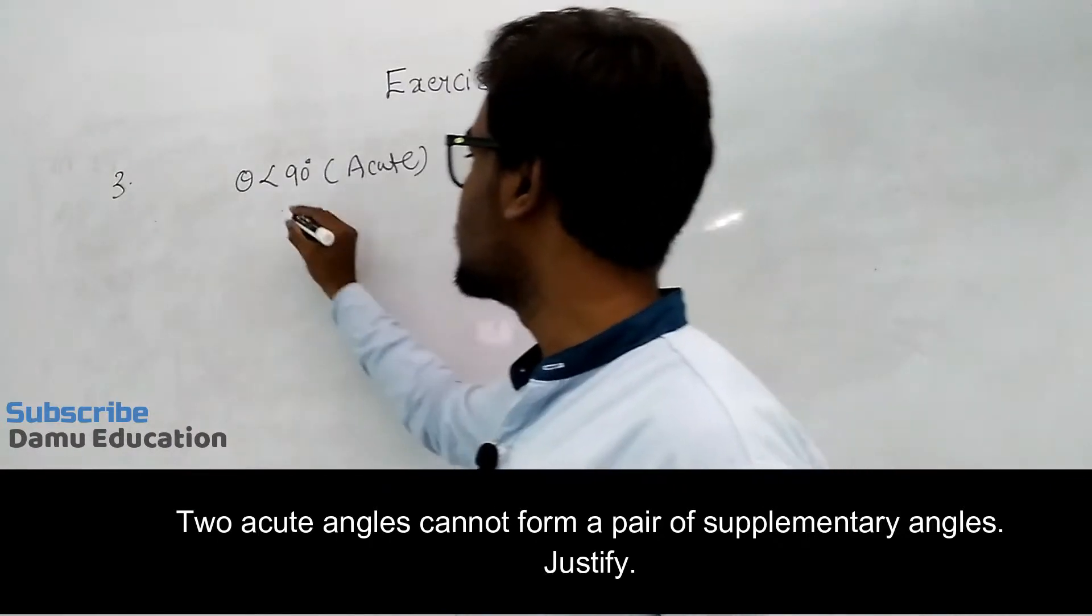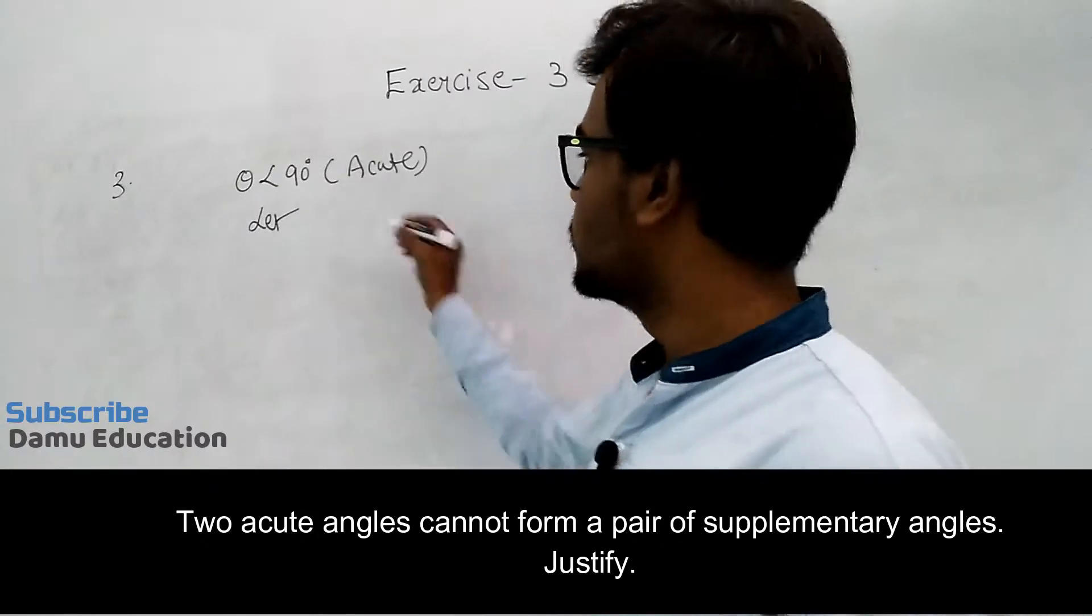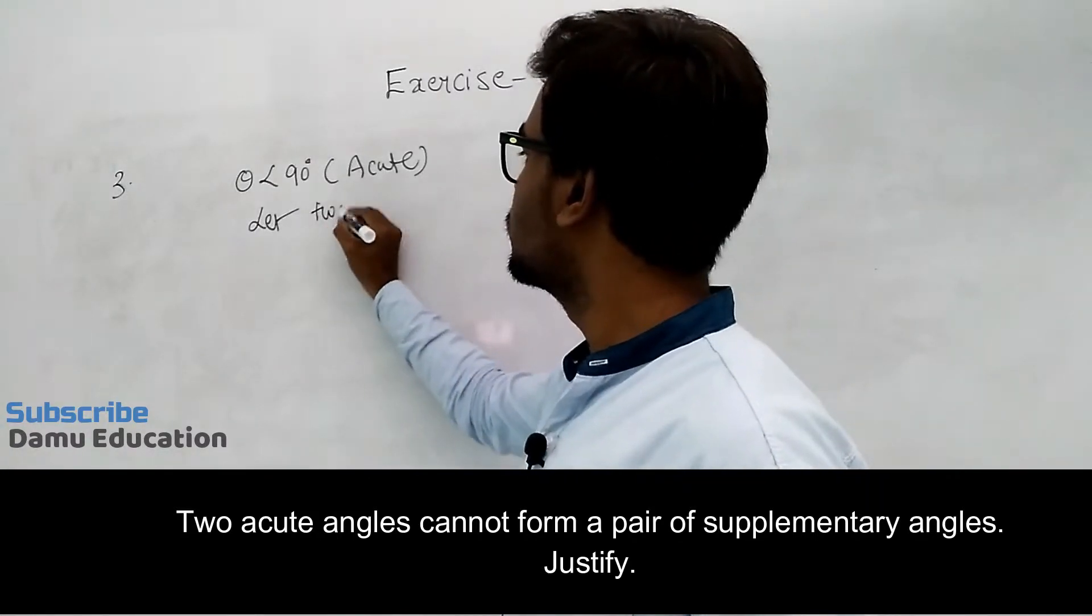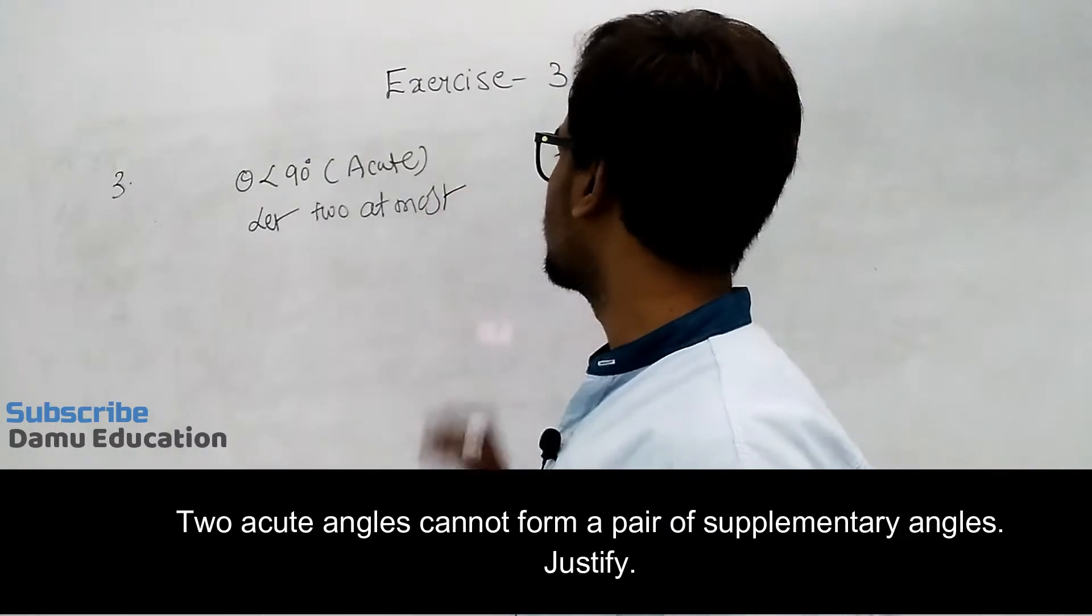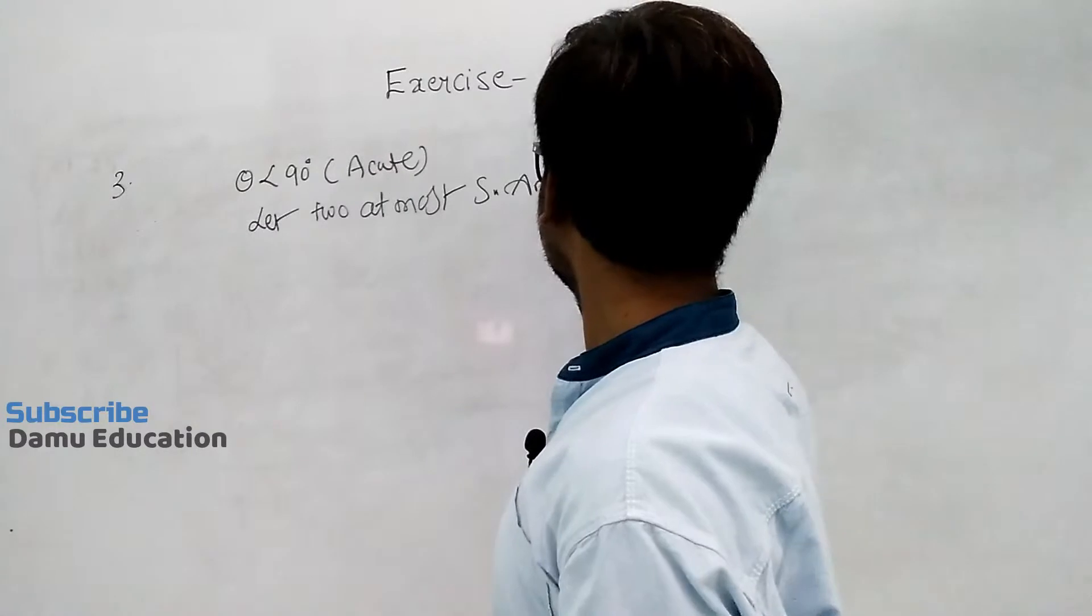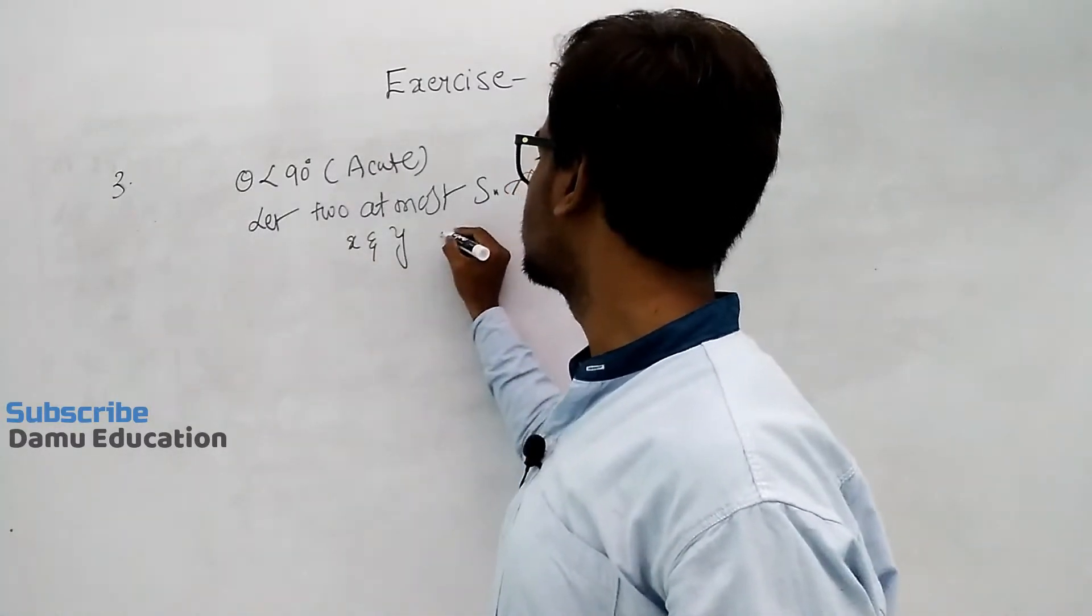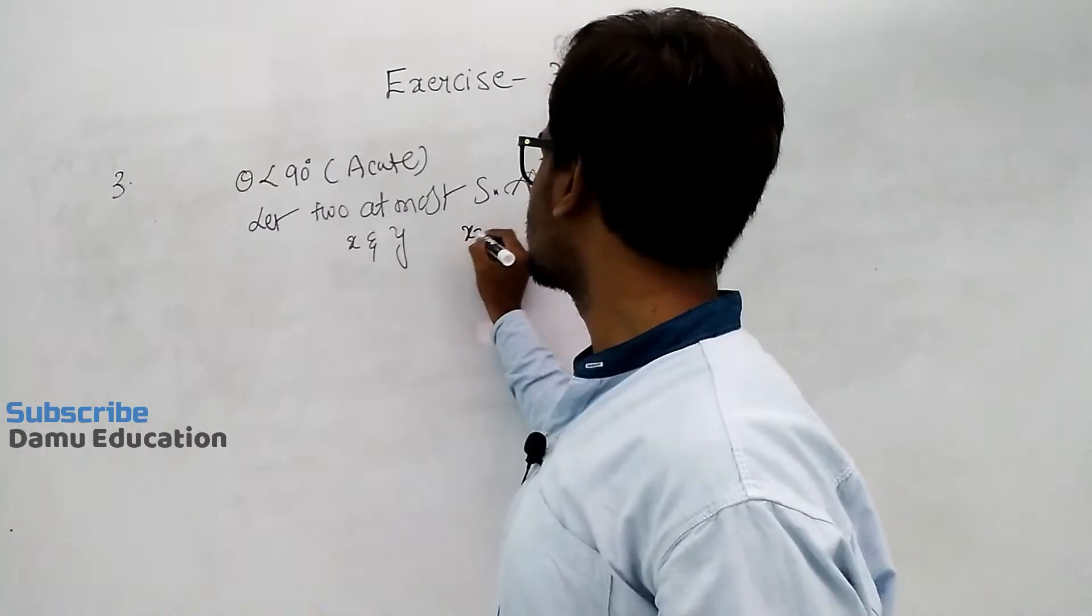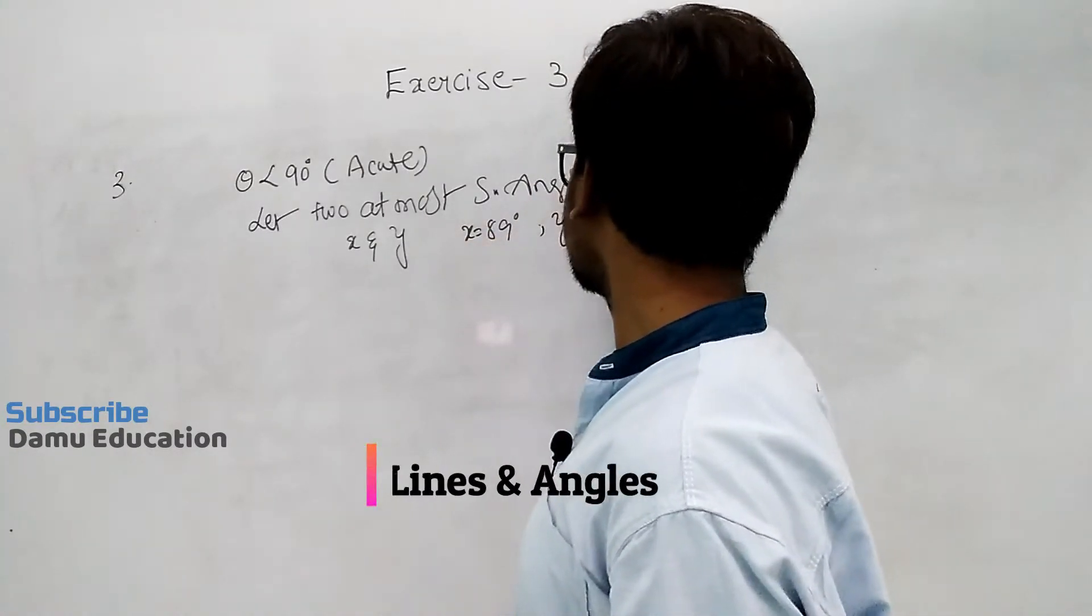Let two supplementary pair of angles at most be x and y, where x equals 89 degrees and y equals 89 degrees.